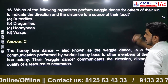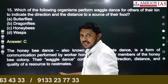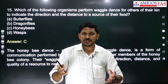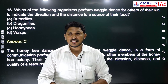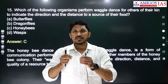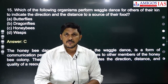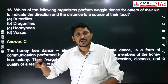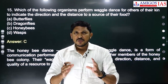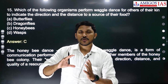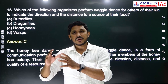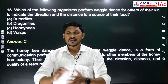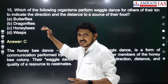Next question: which organism performs a waggle dance to tell its kin about the direction and distance of a food source? Honeybees perform this exercise near their hives or flowers — they waggle and show the direction of food by aligning the angle of their dance with the movement of the sun. You can observe this near flowers in any garden. Honeybees perform this dance — option C is the right answer.